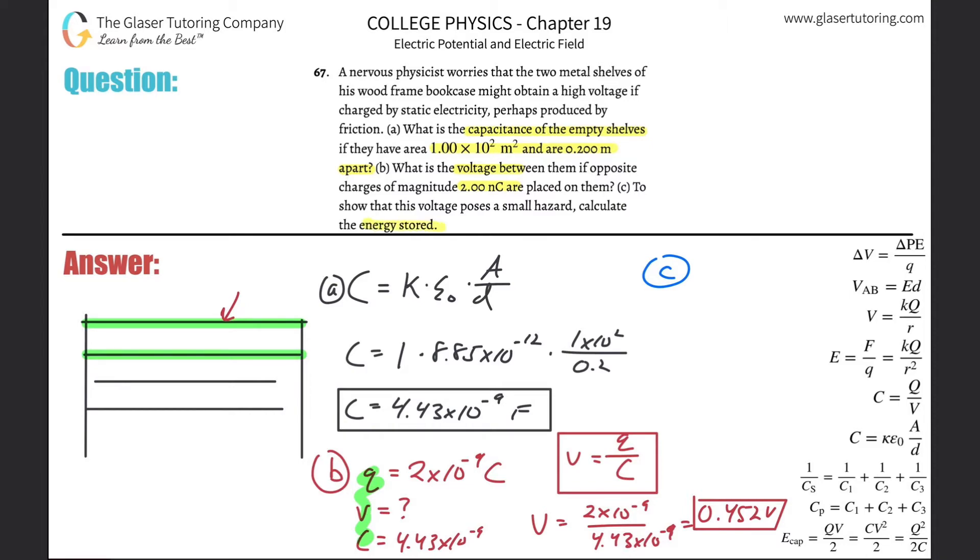To show that this voltage poses a small hazard, calculate now the energy stored. Energy is going to be equal to - now you got to choose a formula that we can use here. We could probably use a whole bunch of them because we know the voltage, we know the charge that's stored, we know the capacitance. You can do any one of them.